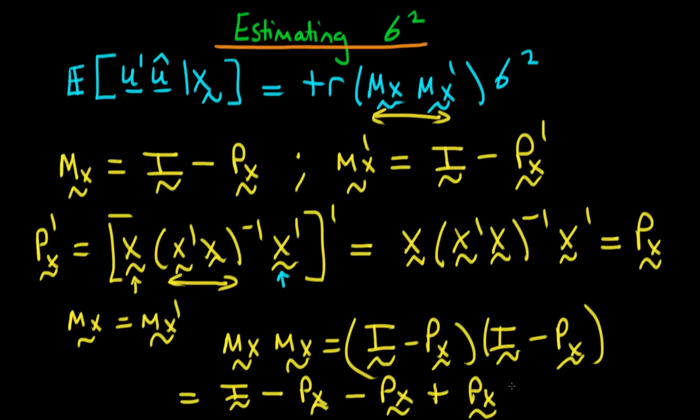We're not going to have a px squared here because px is equivalent to px squared. So you can see that this last term cancels with one of the other terms and we're just left with i minus px. So in other words mx times mx primed is just mx.